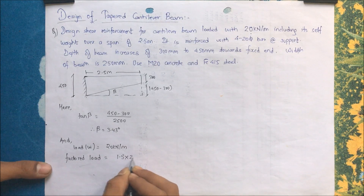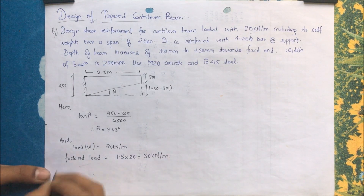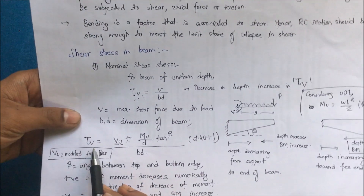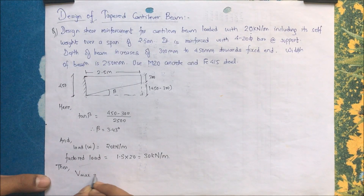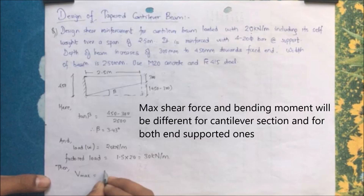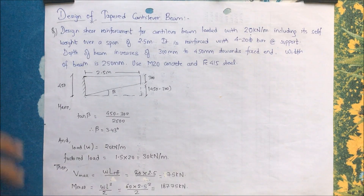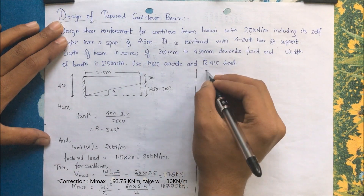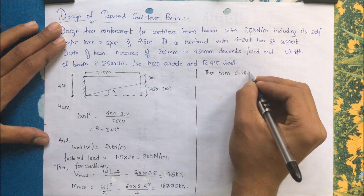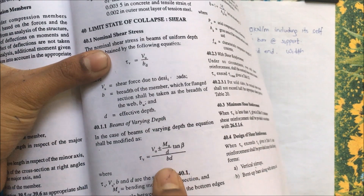For a cantilever beam, maximum shear force V_max = w·L and maximum bending moment M_max = w·L²/2, unlike a simply supported beam where V = wL/2 and M = wL²/8. Substituting values, we get V_max = 75 kN and maximum bending moment = 93.75 kN·m.